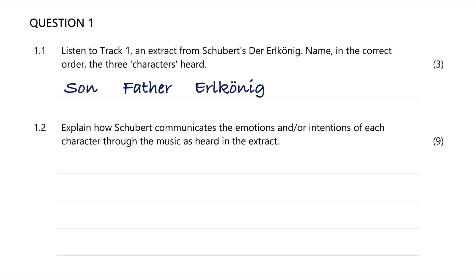Remember the clues we look for here: the son always sings in a higher register and generally in the minor mode. The father is singing in the low register of the singer's voice and in the major mode. The Erlkönig has a much lighter, aria-type melody line and an undulating melody, so you can use those cues to identify each character.